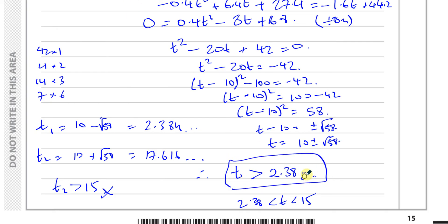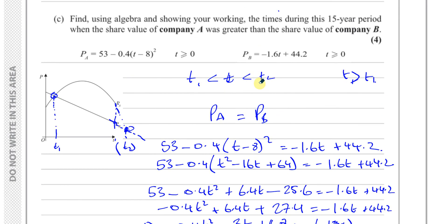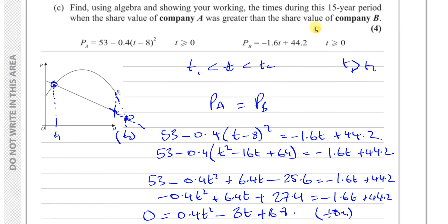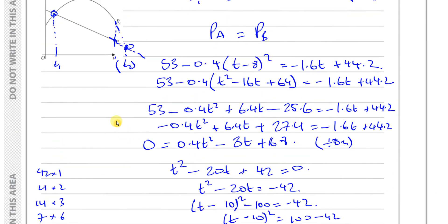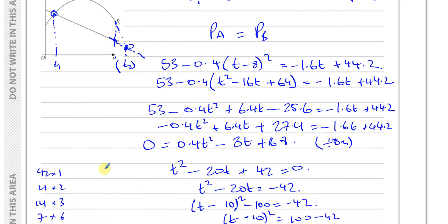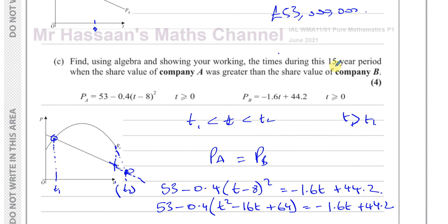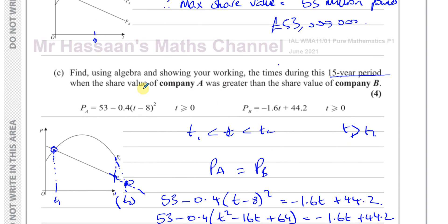T is already standing for the number of years, so the answer is T > 2.38. After 2.38 years, PA will be greater than PB. It would go lower than PB again after about 17 years, but since monitoring only covers 15 years, we don't mention that. That's the answer to Part C.